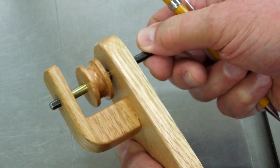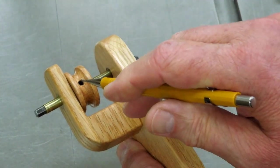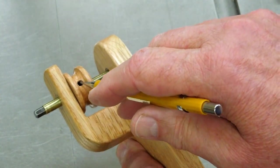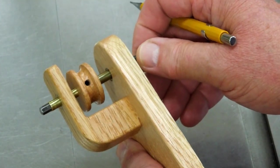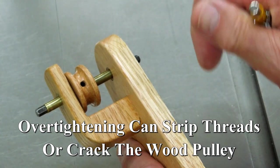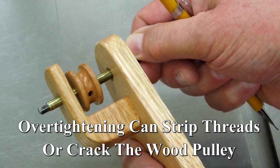And again, this is a 1024 thread and this wood is a fairly strong thread. You only want to tighten it enough to stay in position. You don't want to strip the threads out of your wood, so you've got to be careful.